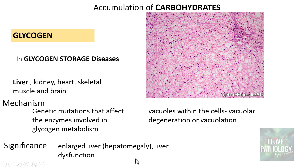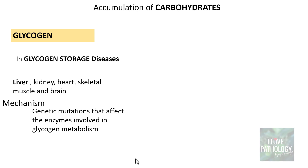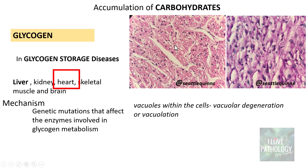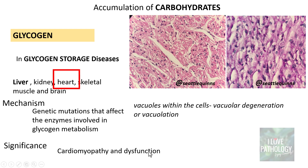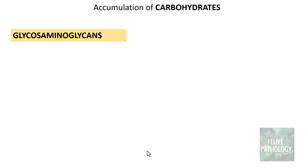In glycogen storage diseases, patients can develop hepatomegaly and liver dysfunction. Glycogen also accumulates in the heart, appearing as vacuoles within cardiac muscle. A special stain shows the pink-staining glycogen within cardiac myocytes. The significance is that these patients can develop cardiomyopathy and ultimately cardiac dysfunction.